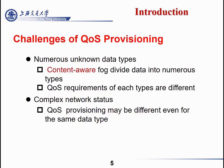Although fog computing has solved many QoS problems, it also introduces challenges for QoS provision. For example, since fog is content-aware, it can divide data into numerous types that may be unknown today, and the QoS requirements of each type are different. Also, with complex network status, QoS provision may differ even for the same data type. So it may be necessary to dynamically provision QoS instead of just storing it in a database.